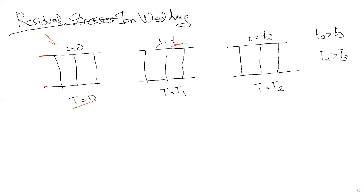After some time, in time increment T1, we are heating only the column in the middle. What happens is that because this middle column is being heated, it wants to expand. But because of equilibrium reasons, the other two columns on the right and left side are not being heated and they restrain it. Therefore, we have compressive stresses being developed in the column in the middle.